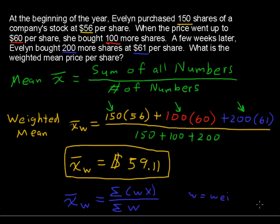So what we had were weights of 150 and 100, the number of shares. And x is the individual numbers or data values that we're concerned about, that's the price per share. So we multiplied the weight 150 times 56, and so on.